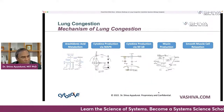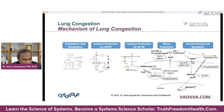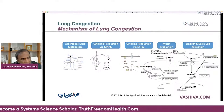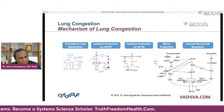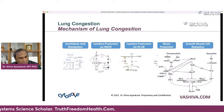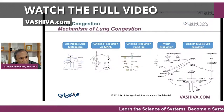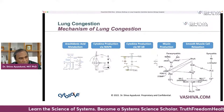Mucin and mucus production can be triggered by, for example, cigarette smoke through a series of pathways. Then there's smooth muscle relaxation: the muscle can either relax or contract through MLCP. When MLCP is present, you get relaxation; when MLCP is blocked, you don't get relaxation. So MLCP is a very important chemical that supports relaxation.